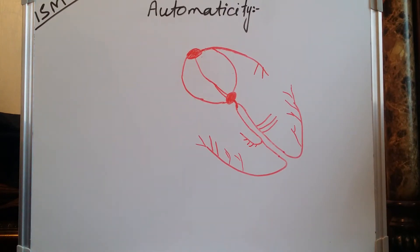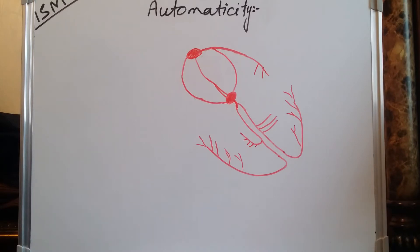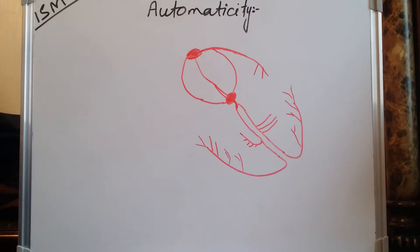Today we are going to discuss the automaticity of the heart — how the heart works, how the impulse is generated, and the pathway which is followed by impulses. We will discuss from where the impulse is generated and what type of cells are present in the heart that are responsible for the production of impulses. The heart is made of cardiomyocyte cells, and 1% of cardiomyocyte cells are specialized cells responsible for the production of impulses.